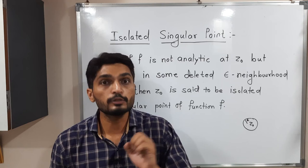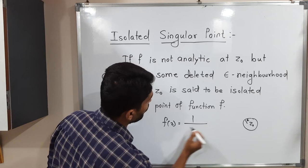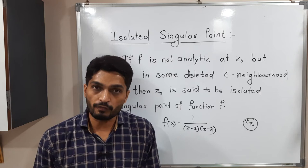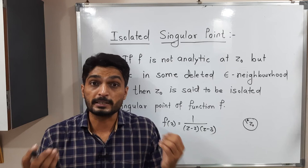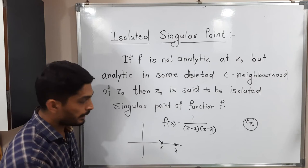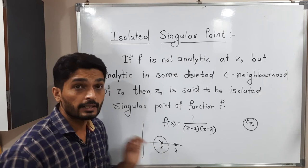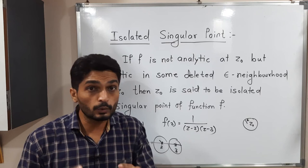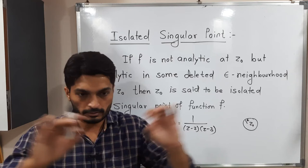Consider the function f(z) = 1 / [(z - 2)(z - 3)]. The singular points are z = 2 and z = 3, since putting either value makes the denominator zero. If you plot these points, 2 and 3 are separate, so it is possible to draw an epsilon neighborhood around 2 where the function is analytic other than at 2, and similarly for 3. Therefore, z = 2 and z = 3 are isolated singularities — they are separate from each other.